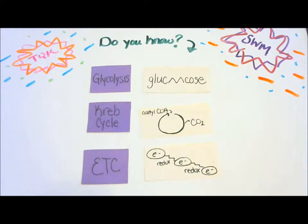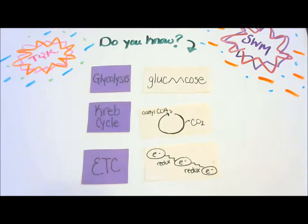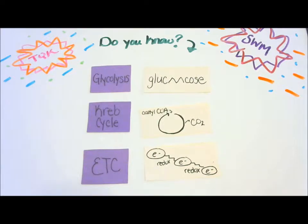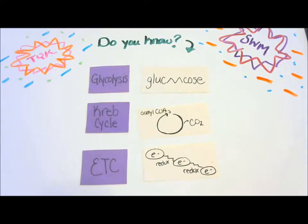Hey my rockers, welcome to another study with me video where you don't just watch me study, but we study together. In this video it will be a four-part video: the first section covers glycolysis, Krebs cycle, and electron transport chain in an overview; the second part covers glycolysis in more depth, also known as the Embden-Meyerhof pathway; the third is the pentose phosphate pathway; and the fourth section covers the Entner-Doudoroff pathway. Let's start studying part one.